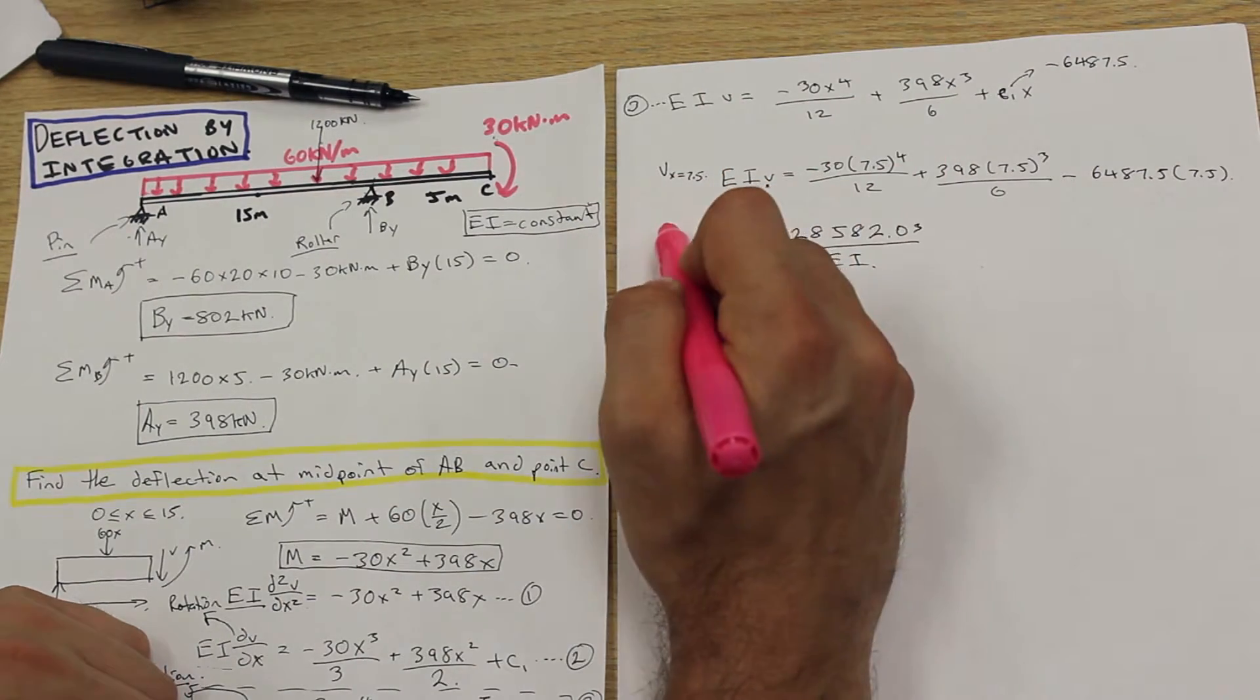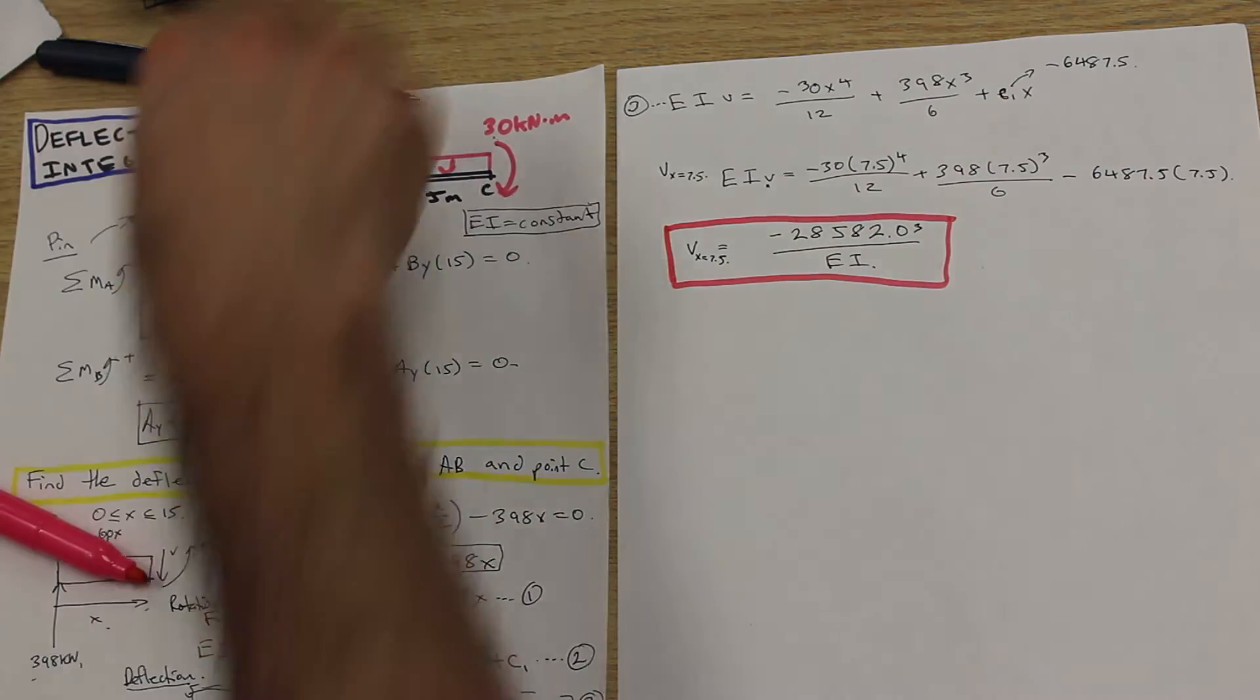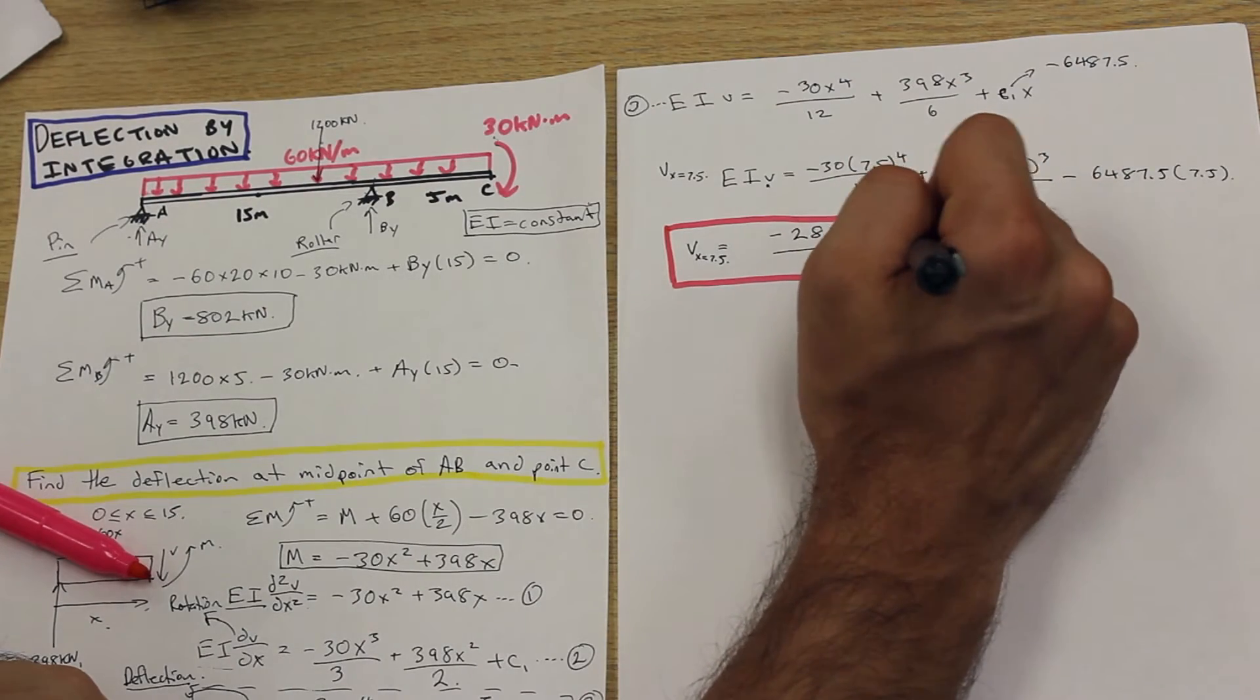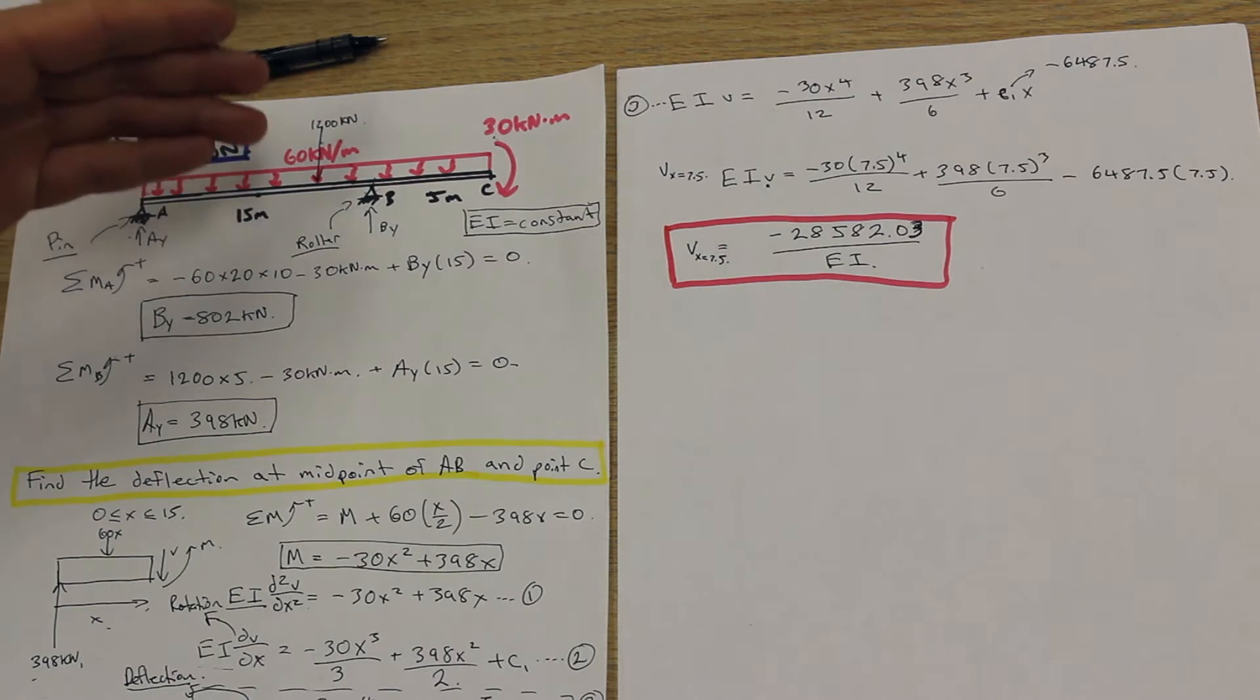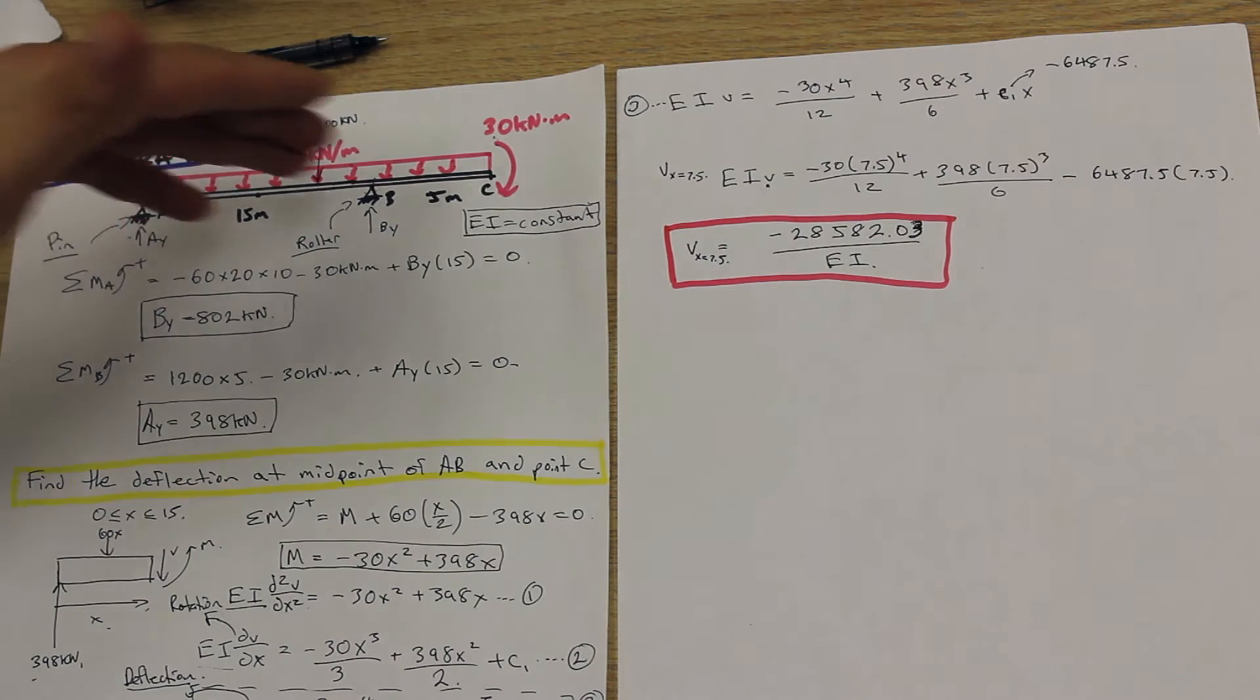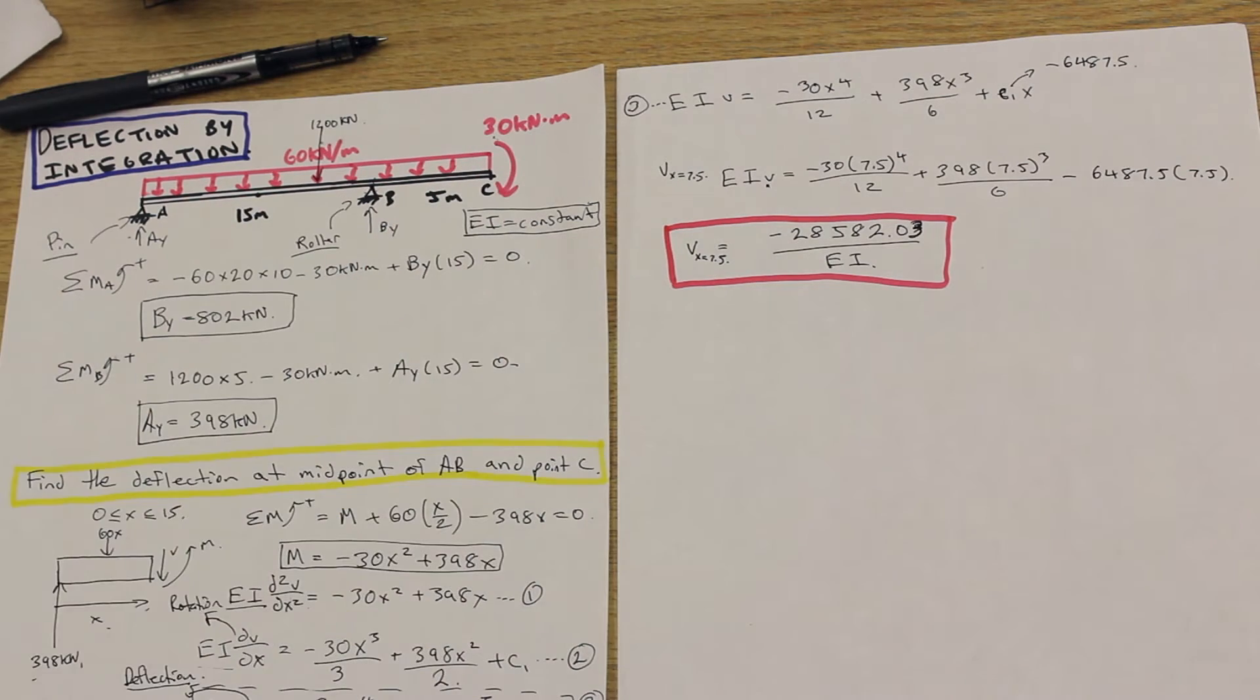I mean, that's once we derive the equation. And sorry, if my writing is a little small there, that's just a 3 there. And that is essentially the deflection at the midpoint between A and B. So in the next video, we are going to show you how to solve for the deflection at C. Hopefully you understood that. If you have any questions, post down below or send us an email and stay tuned for the next video.